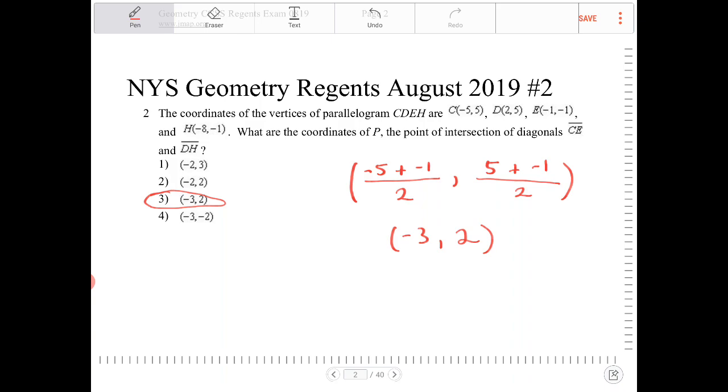Although, if you want to confirm for yourself, I encourage you to try and figure out the midpoint for DH. You're going to end up with the same coordinate, negative 3, comma 2.